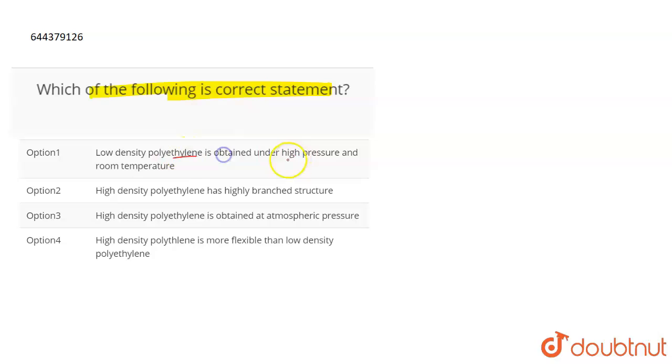Low density polyethylene is obtained under high pressure and room temperature. This is an incorrect statement because if we talk about LDPE, which is low density polyethylene, then it is obtained at very high pressures and also high temperatures, right? Not room temperature. At room temperature it is not reactive at all, so it needs a temperature.